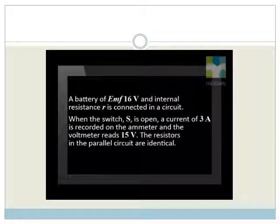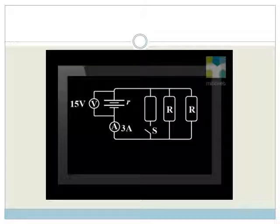a current of 3 ampere is recorded on the ammeter and the voltmeter reads 15 volt. The resistors in the parallel circuit are identical. Here is our circuit diagram.